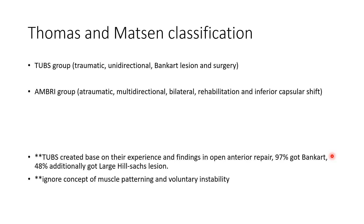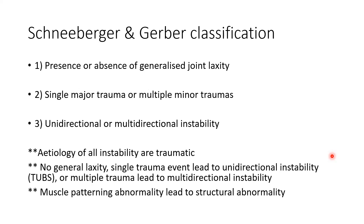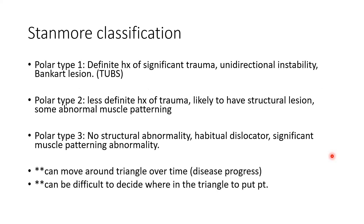The Stanmore classification is the latest and most complete. It divides instability into three poles of a triangle. Polar Type 1: definite history of significant trauma, unidirectional instability, usually with Bankart lesion — TUBS falls here. Polar Type 2: less definite history of trauma, likely to have structural lesion, with some abnormal muscle patterning. Polar Type 3: no structural abnormality, more like a habitual dislocator with significant muscle patterning abnormality. You can move around the triangle over time as the disease progresses.